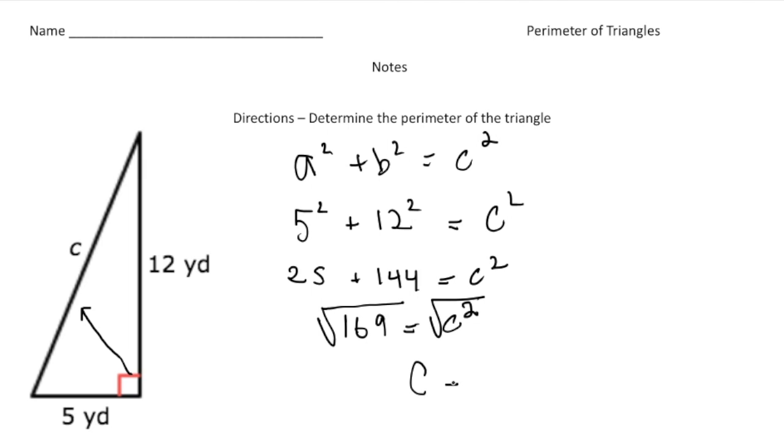So C can either be positive or negative 13, right? But because we're talking about a distance, we're only going to use the positive version. So C is going to be 13 yards.